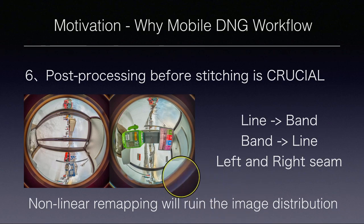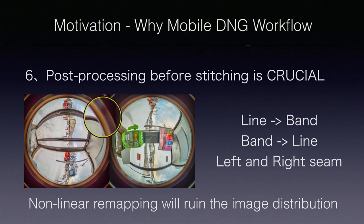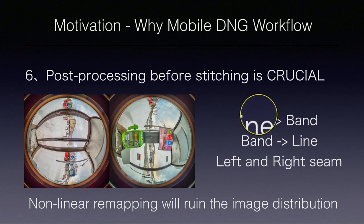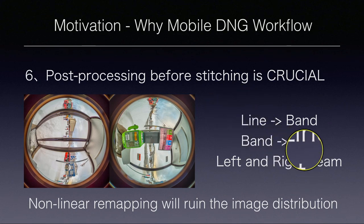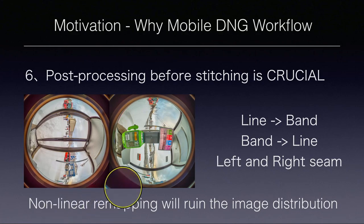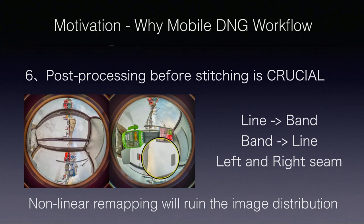For chromatic aberration on a fisheye image, you can see a line. But after remapping to equirectangular, that line might become a wide band — the software won't treat it as chromatic aberration, it may look like a color area. Sometimes the band remaps to a line. The nonlinear equirectangular remapping ruins the image distribution. So it's better to post-process on the dual fisheye images, which are raw data straight out from the camera — post-processing on raw data before stitching.